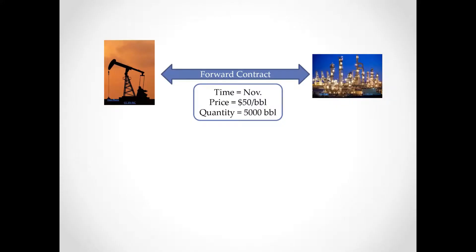What are the limitations of these forward contracts? First, the two entities — the producer and consumer — are not exactly the same size. Let's say the refinery is very large or the producer is very large, and one of them is much smaller or larger than the other. They would have to go and find perhaps 10 other counterparties to negotiate and sign individual contracts with each of them, and do it for almost every month. It's doable and is still an ongoing activity in financial markets, but it's not the most efficient way of doing it.